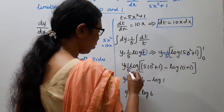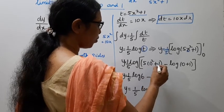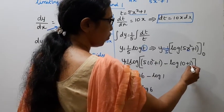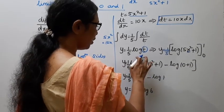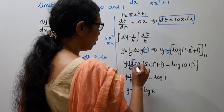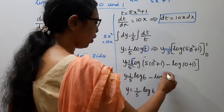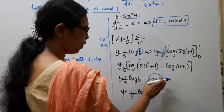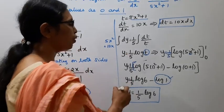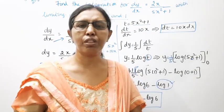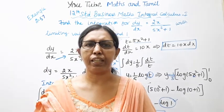So y equal to 1 by 5 times [log(5 times 1 squared plus 1) minus log(5 times 0 plus 1)], which is 1 by 5 times [log(6) minus log(1)]. Since log 1 equals 0, the answer is y equal to 1 by 5 log 6. Subscribe to the channel and click the bell button — you can get 100 marks.